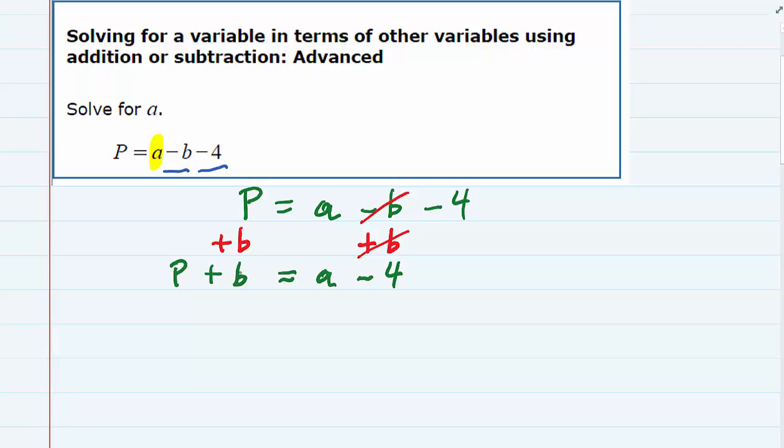And then to continue trying to get the a by itself, we want to move that minus 4. So the way we can undo subtracting 4 is again to use addition. I can add 4 to the right-hand side, as long as I add 4 to the left-hand side as well. Once again, minus 4 plus 4 cancels, giving me the a by itself on the right-hand side.